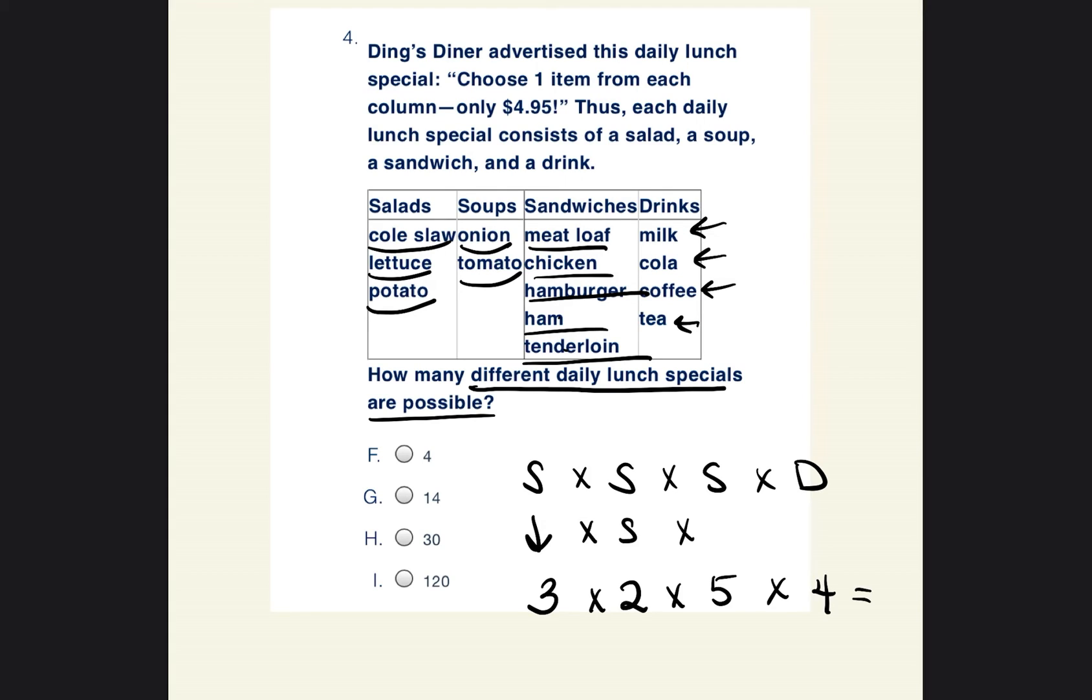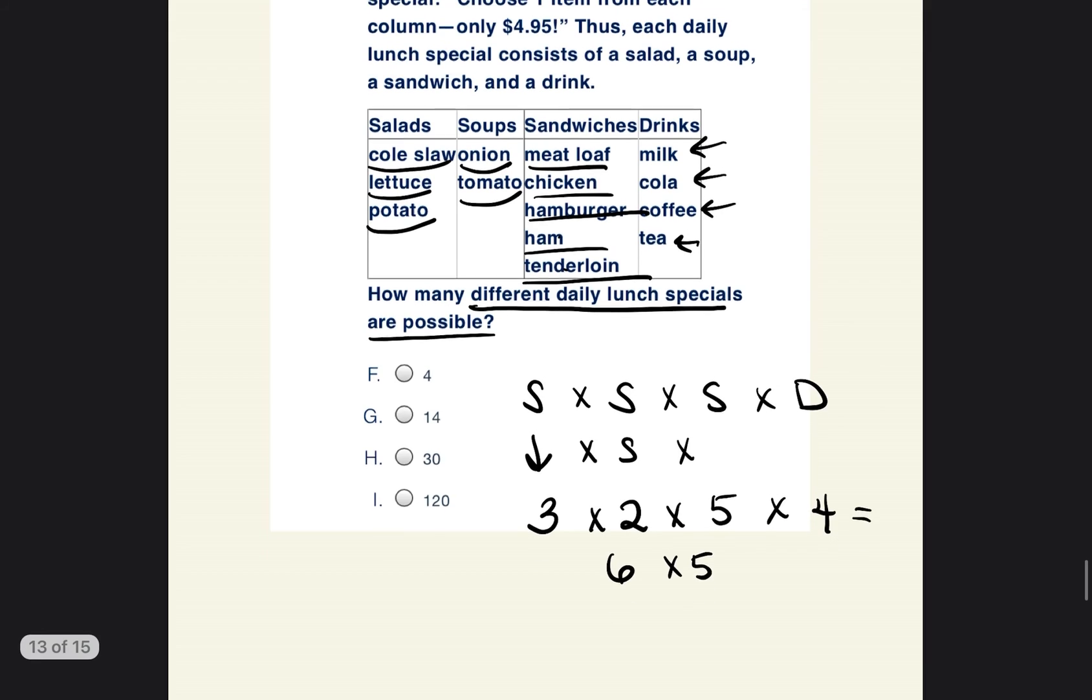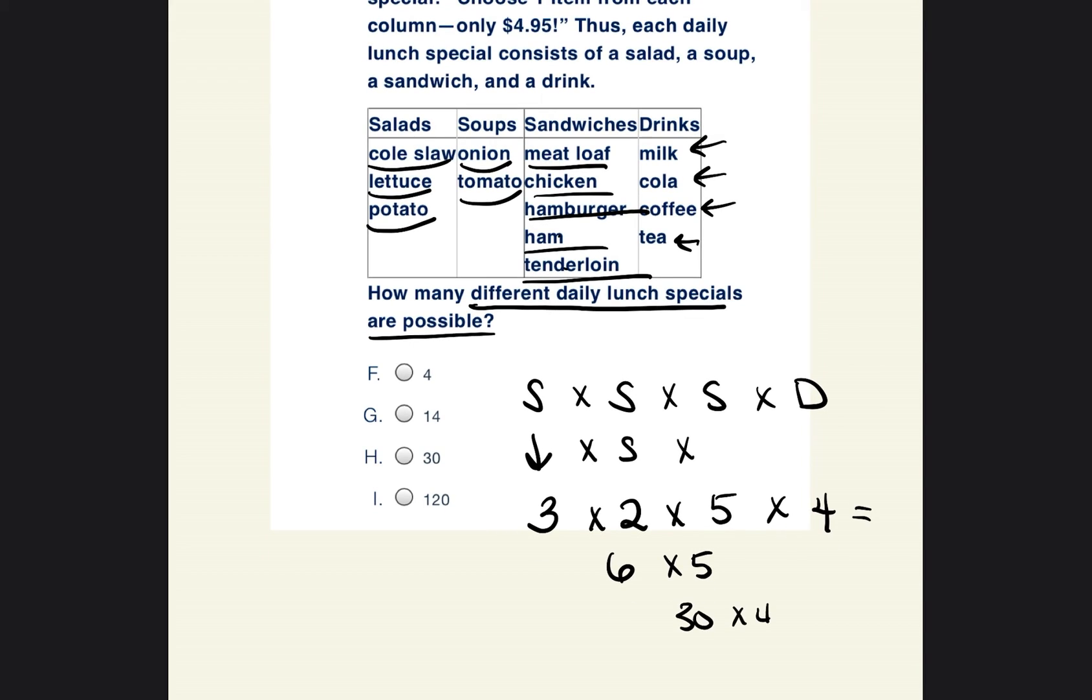So to find the possible combinations, you would do three times two, which is six. Six times five, which is 30. And then 30 times four, which is equal to 120. So our answer is going to be I. So anytime they're asking you to figure out how many combinations of things, all you have to do is multiply how many choices are in each column: the salads times the soups times the sandwiches times the drinks, and you're able to get your answer.